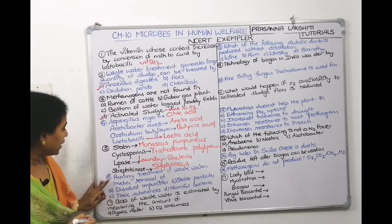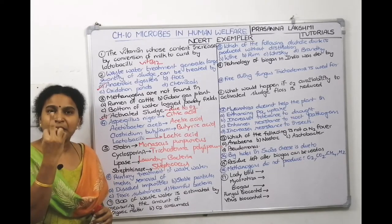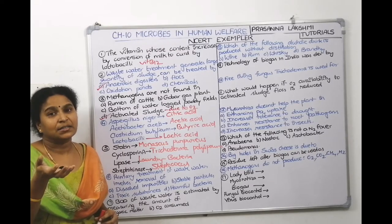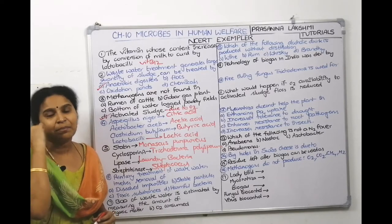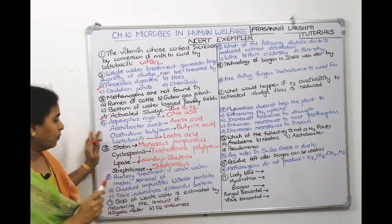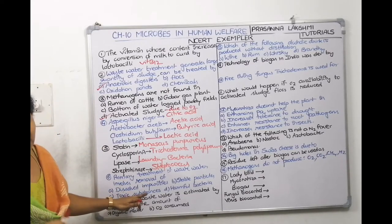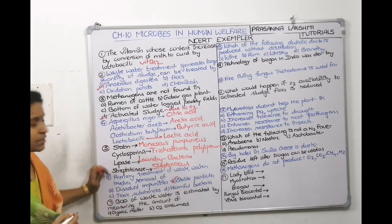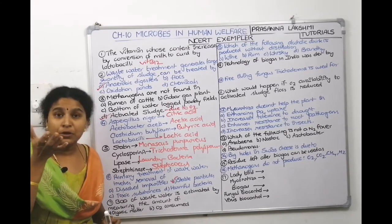Sixth question: primary treatment of wastewater involves the removal of — what? In NCRT, sewage is treated in two stages: primary treatment (physical treatment) involving filtration and sedimentation to remove solid particles, and secondary treatment (biological treatment) using aerobic and anaerobic organisms to remove organic matter. Primary treatment removes solid/floating particles like stones, pebbles, polythene, so the answer is B — suspended/solid particles.